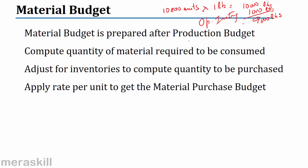However, you cannot have absolutely no inventory at the end of the month or quarter being budgeted. So I must keep some closing inventory because production will be continuous. If I must have a closing inventory of 1,500 pounds, then I have to purchase 10,500 pounds of material in total.